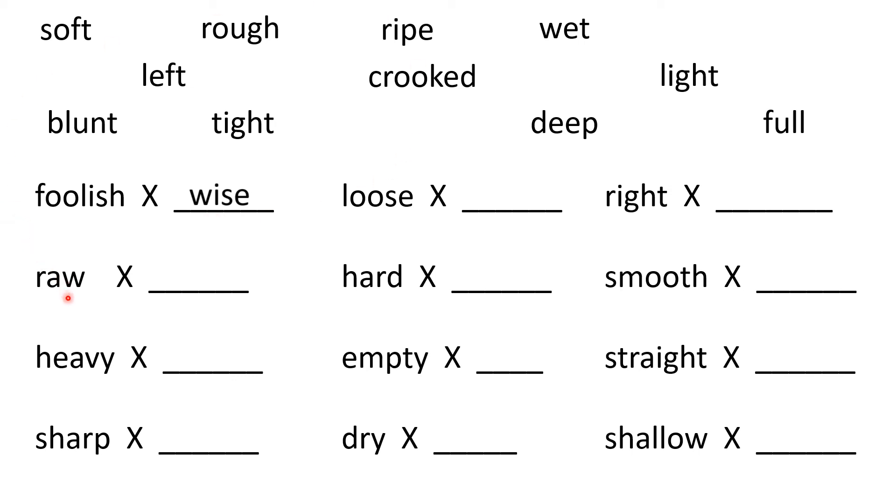Raw. Raw in Hindi would be kacha. Ripe. Raw and ripe. Raw mango, ripe mango. Now you can also use these with words, children. Like foolish man, wise man. Raw mango, ripe mango.